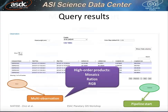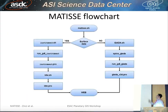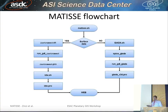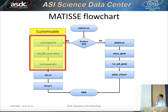This is the flowchart of Matisse, which is different for surface and non-surface data. At the present time, we have some JADA simulations from Rosetta as non-surface data. The first part of the pipeline is very customizable, and therefore we can add other instruments.